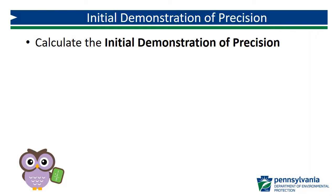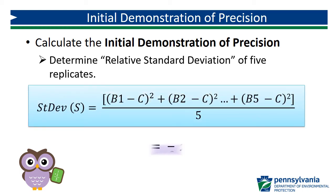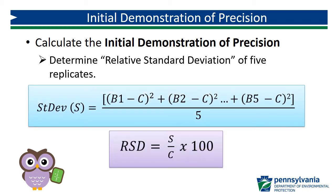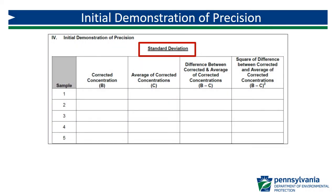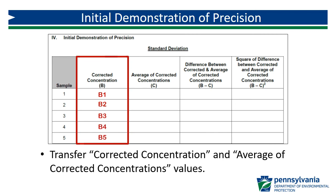The next step is to evaluate the precision of the analyst. You do this by determining the standard deviation and relative standard deviation of the five replicates. Here are the formulas for standard deviation and relative standard deviation. Begin by determining standard deviation: transfer the five individual corrected concentration values to their respective fields. The corrected concentration values should match the values calculated for each individual sample on the first page.